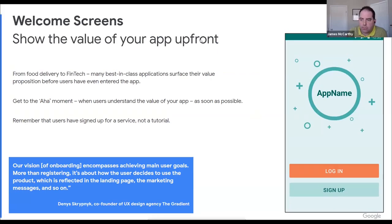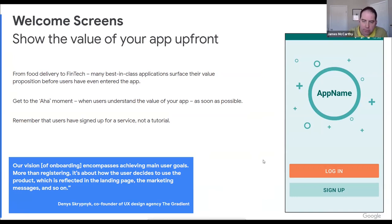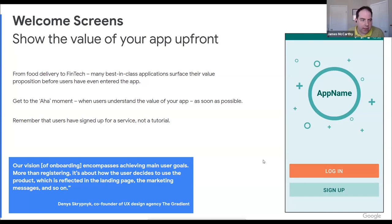The value proposition is one of the most critical things you can do for your app. This screenshot on the right doesn't have an actual value proposition — there's no statement as to why you should log in or sign up. Many best-in-class applications now have at least that statement. Even Amazon or Instagram give you at least a statement. Warby Parker's value prop is simply 'get free frames at home' — you get five, try them on for free, send back the ones you don't want. You want to get users to understand the value of your app as soon as possible. It's less about registering and more about how they decide whether to use the product — what's on the landing page and what's the marketing message.